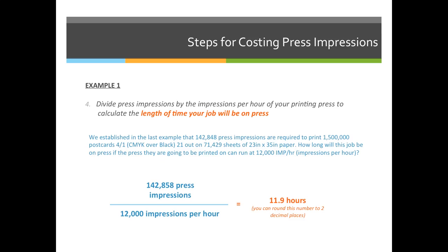So we established in the first example that 142,848 press impressions are required to print 1,500,000 postcards. They will print four over one — CMYK on the front and black on the back — 21 out on 71,429 sheets of 23 by 35 inch paper. How long will this job be on press if the press they are going to be printing on can run 12,000 impressions per hour?